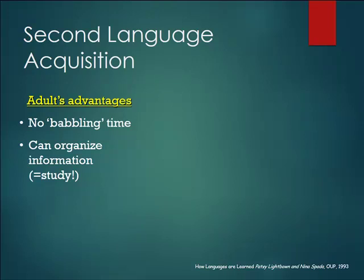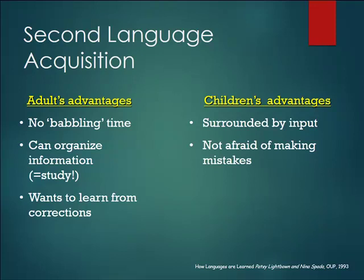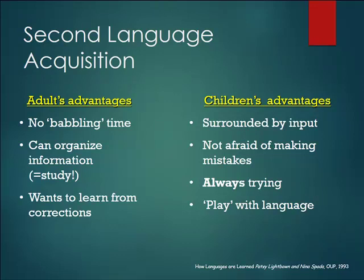Adults have a more sophisticated understanding of interaction than children do. Some advantages of adults: they don't have to go through a babbling phase, they can organize their information using metacognitive strategies — in other words, they can study. Adults are also interested in learning from correction, not just about the pragmatic import of what they're saying, but the linguistic import as well. As for children's advantages: most of the time they're surrounded by input, and they're not afraid of making mistakes at all. They just keep trying, always practicing, and they play with the language a lot.